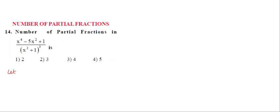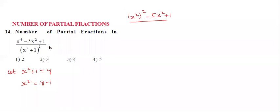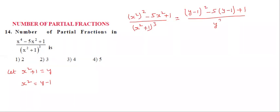So here, let x square plus 1 equal to y. Then x square equals y minus 1. Now substitute in the question. x power 4 minus 5x square plus 1, divided by x square plus 1 whole cube becomes: (x²)² minus 5x² plus 1 divided by (x²+1)³. Substituting x² = y-1: (y-1)² minus 5(y-1) plus 1, all divided by y cubed.